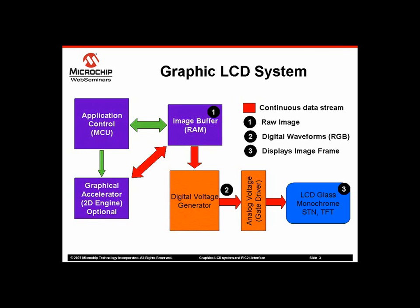All these blocks combined together give only a basic raster — it is like turning a TV on without any TV signal. Ideally, you want to display menus, buttons, and icons on your screen. To do this, you will need an intelligent device like an MCU.